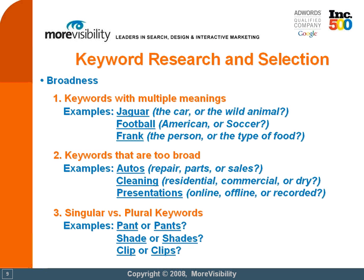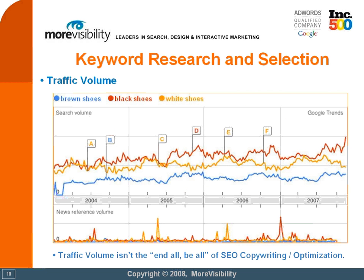So, take the time in selecting your keywords, and make sure that they mean what you want them to mean in the context that you're looking for. Finally, consider the traffic volume of a specific keyword. In this example, we've used Google Trends, and we're looking at the search volume trends of the last three years of three different keywords.